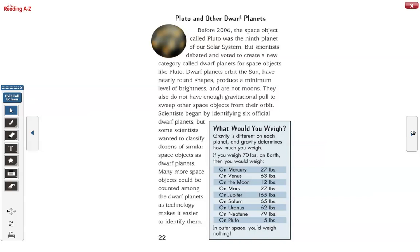Pluto and other dwarf planets. Before 2006, the space object called Pluto was the ninth planet of our solar system. But scientists debated and voted to create a new category called dwarf planets for space objects like Pluto. Dwarf planets orbit the sun, have nearly round shapes, produce a minimum level of brightness, and are not moons. They also do not have enough gravitational pull to sweep other space objects from their orbit.